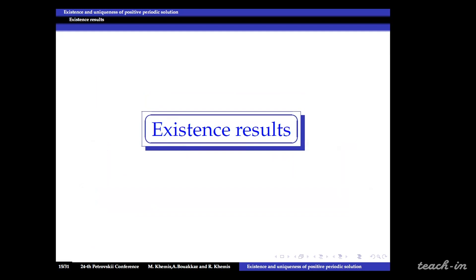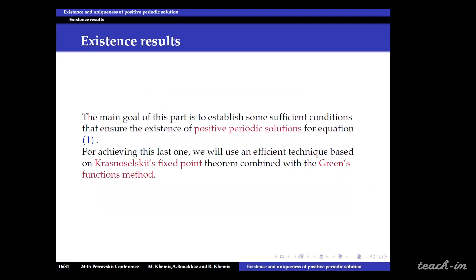Let's now move on to the third part. The main goal of this part is to establish some sufficient conditions that ensure the existence of positive periodic solutions for equation 1, and for achieving this last one we will use an efficient technique based on Krasnowski's fixed point theorem combined with Green's functions method.